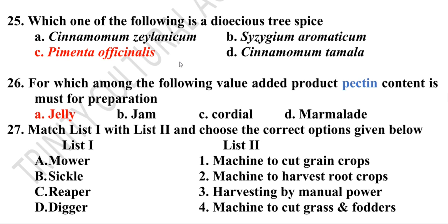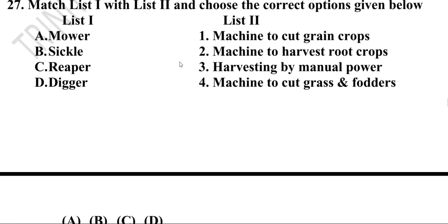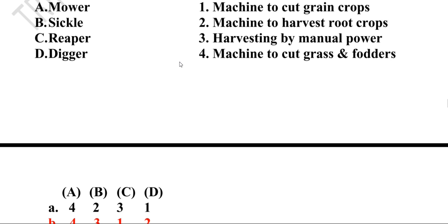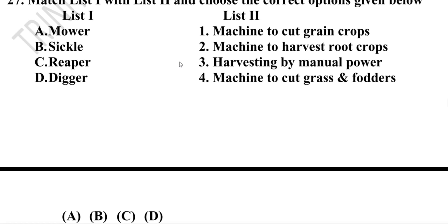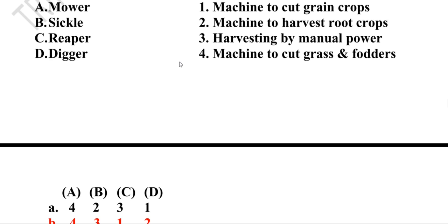Twenty-sixth question: For which value-added product is pectin content a must? For preparation of jelly. Twenty-seventh question: Which fruit is rich in pectin? The answer relates to Goa variety. Match list one with list two — mower machine to cut grasses and fodders; sickle for harvesting by manual power; reaper machine to cut grain crops; digger machine to harvest root crops.